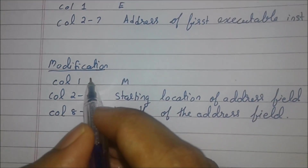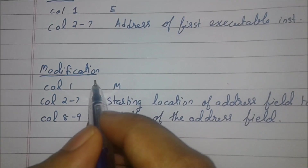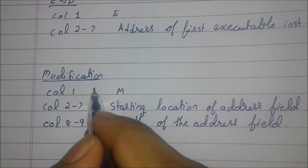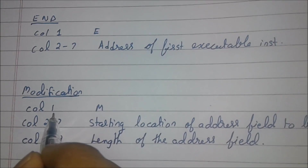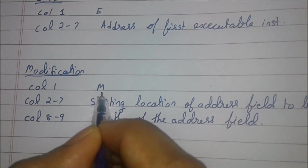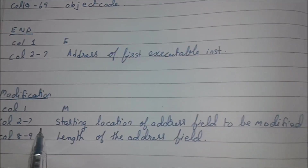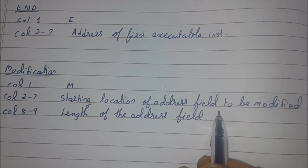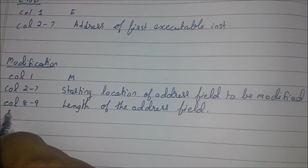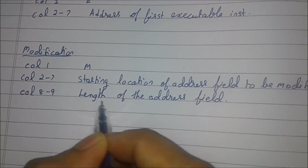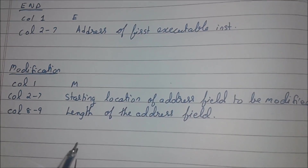Next is the modification record, which is very useful in program relocation. In this we use column 1 as M (alphabet M), column 2 to 7 is the starting location of the modification record, and column 8 to 9 is the length of the address field of the modification record.